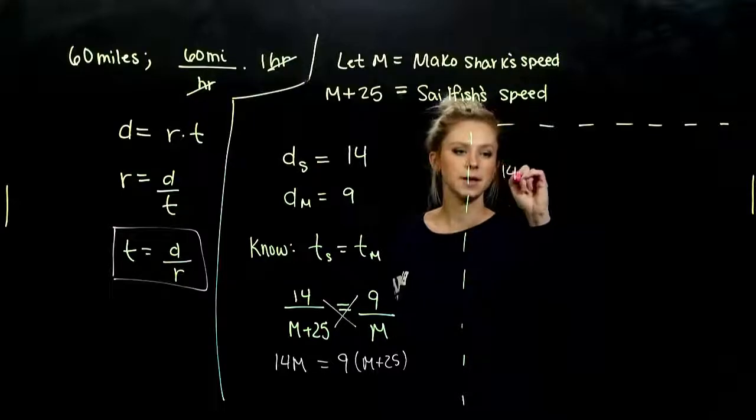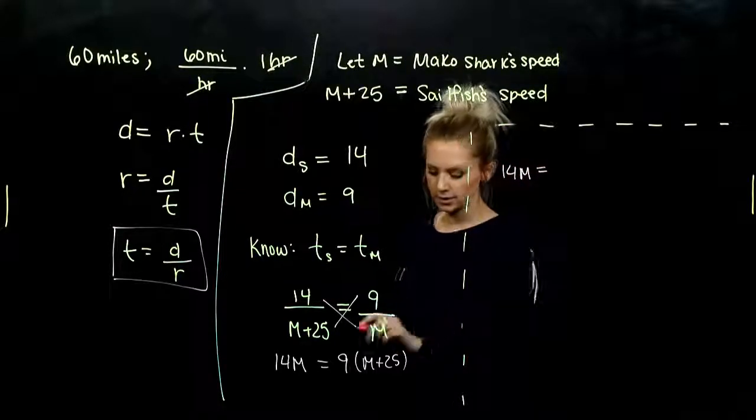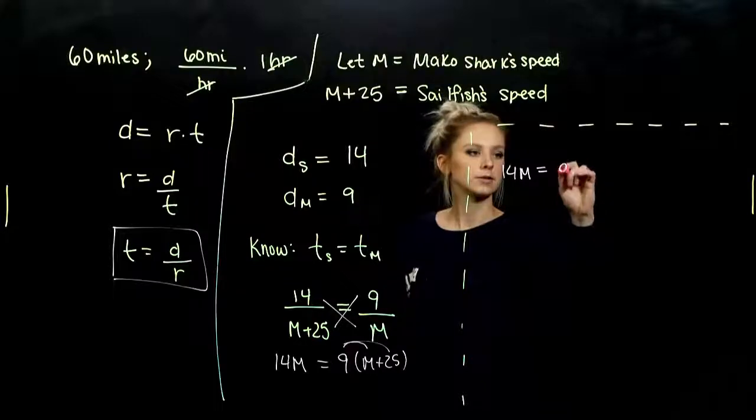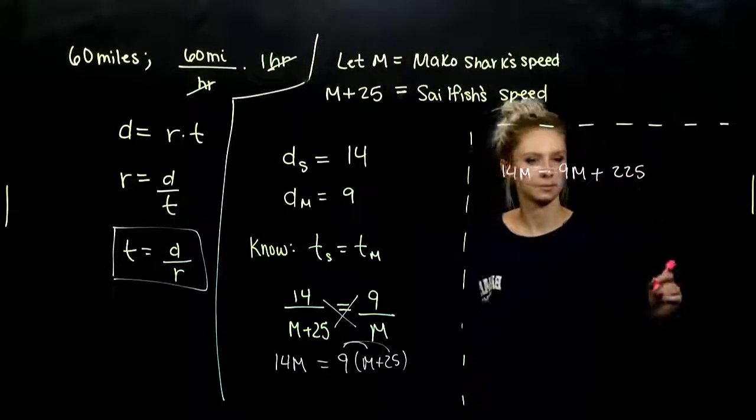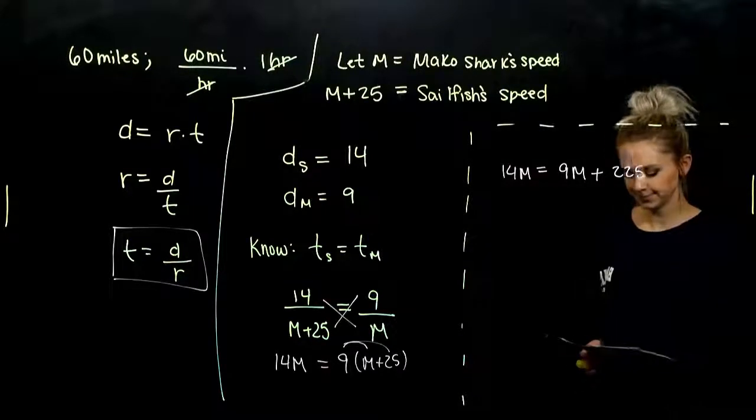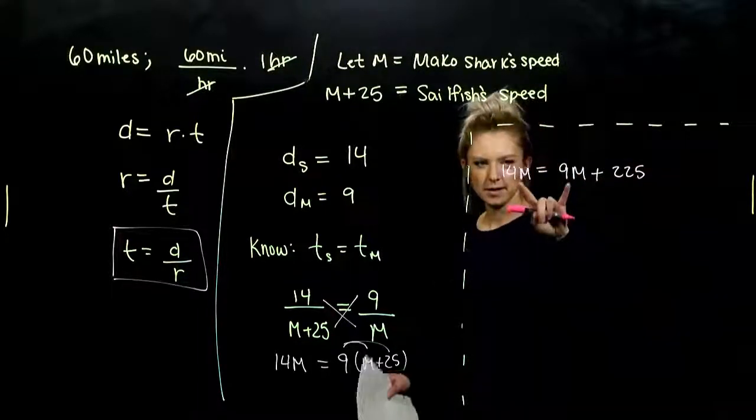So I've got 14M on the left. And I need to distribute to get rid of these parentheses. So I get 9M and 225 when we do that multiplication. And we need the M's together.